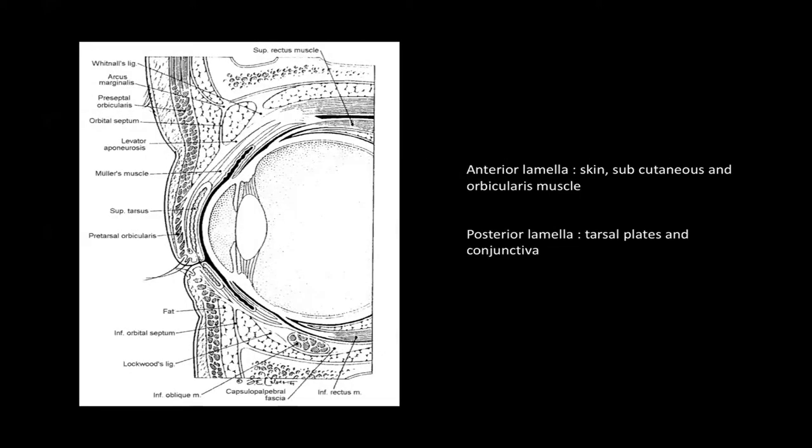It's always good to conceptualize the reconstruction, because you need to know what the goals of reconstruction are and how best to achieve them. If you look at the sagittal section of the globe and the eyelids, you can see that the eyelid is a complicated structure.